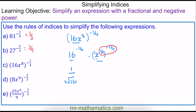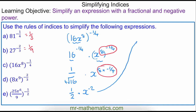This becomes x to the power of 8 multiplied by negative 1 quarter. So we have 1 over 2, multiplied by x to the power of negative 2. Now I can write this as a product of two fractions: one half multiplied by 1 over x squared, which becomes 1 over 2x squared.